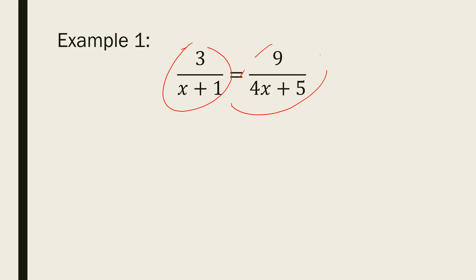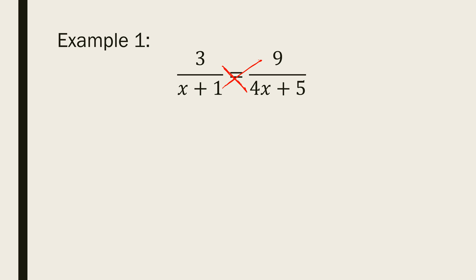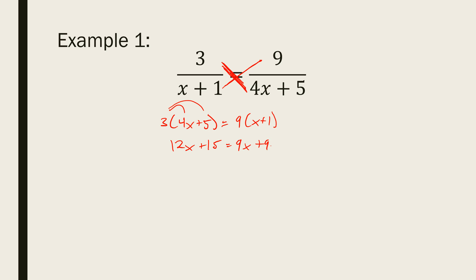Here's an equation: it involves a fraction on the left and a fraction on the right — just one fraction on each side. You've done many of these before. We can simply cross multiply: multiply the 4x plus 5 over to cancel it, and the x plus 1 over to cancel it. Distribution is going to happen, so put it in parentheses. 9 times x plus 1: distribute to get 12x plus 15 equals 9x plus 9. Subtract 9x to get 3x, subtract 15 to get negative 6, so x equals negative 2.